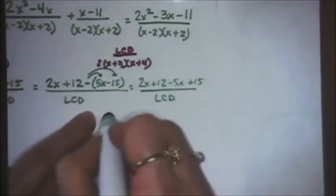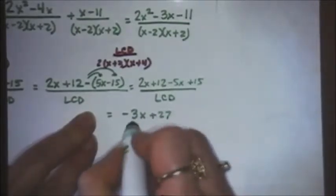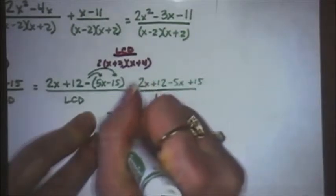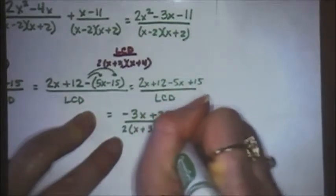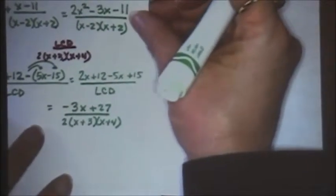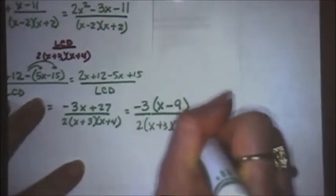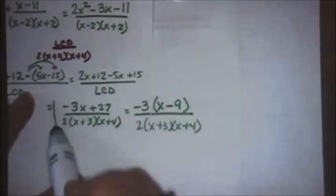That's an extra step, but I want to make sure I don't make any mistakes with my signs. I can distribute the negative to both pieces, so this is now 2x plus 12 minus 5x plus 15 over the LCD. When I work this out, I get negative 3x plus 27 over 2, x plus 3, x plus 4. Looking at the top, I think it will factor — I'll factor out a negative 3 and I'm left with x minus 9 in parentheses. After factoring, nothing simplifies or cancels, so either of these two answers are correct.